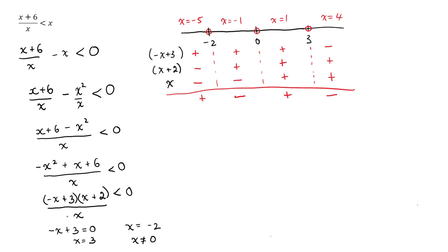Our rational expression needs to be less than zero, so we're looking for when it is negative. The intervals where the overall expression is negative are between negative 2 and 0, and greater than 3. In interval notation, because negative 2 is not included we use a round bracket from negative 2 to 0 (0 not included), union from 3 to infinity. That concludes our second example — this is one way of solving rational inequalities. Thank you.